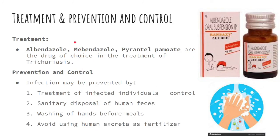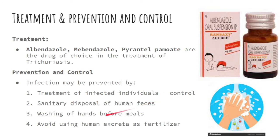Treatment for trichuriasis can be through albendazole, mebendazole, or pyrantel pamoate as the drug of choice. For prevention and control, infection may be prevented by: number 1, treatment of infected individuals to control the spread; number 2, sanitary disposal of human feces; number 3, washing hands before meals; and number 4, avoiding use of human excreta as fertilizer, since the main mode of transmission is through the fecal-oral route — ingestion of the embryonated egg.